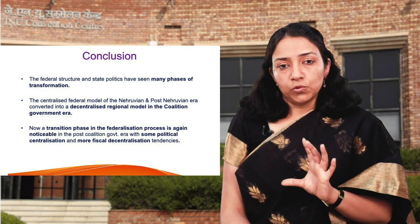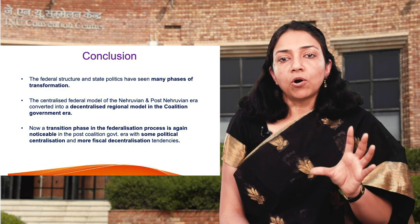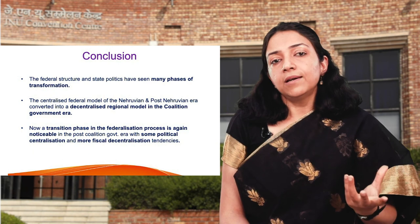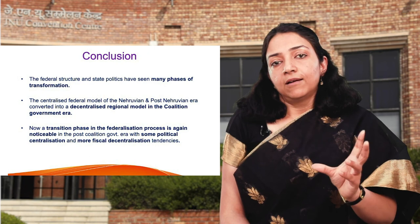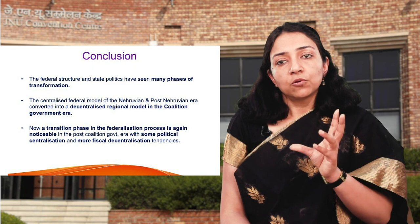In conclusion, the federal structure and state politics have seen many phases of transformation. The centralised federal model of the Nehruvian and post-Nehruvian era was converted into a decentralised regional model during the coalition government era. Now in the post-coalition government time, it is a transition phase: there are some indications of political centralization, but there are more indications of fiscal decentralization. Thank you.